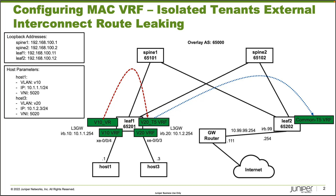I want to point out first the V10 VR. The V10 VRF is a MacVRF and it's going to be connecting into the V10 VR, which is a virtual router routing instance type. The IRB10 interface, which is the default gateway for Host 1, is going to be in that V10 VR virtual router. Then we have the V20 T5 VRF, which is a standard VRF, and it'll have the IRB20 interface which is the default gateway for Host 3.